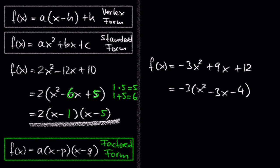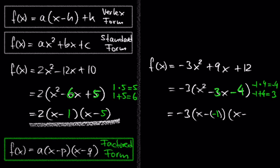Again, we are looking for two numbers which multiplied by each other equal negative 4, and the same two numbers which are added together equal 3. Feel free to pause the video and find these two numbers. The two numbers are negative 1 and 4: negative 1 times 4 is negative 4 and negative 1 plus 4 is 3. So we get negative 3 times (x minus (minus 1)) times (x minus 4), which simplifies to negative 3 times (x plus 1) times (x minus 4).